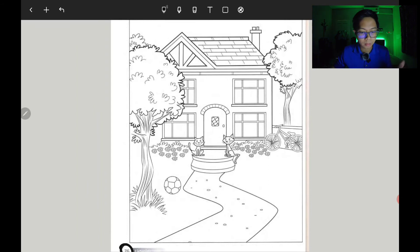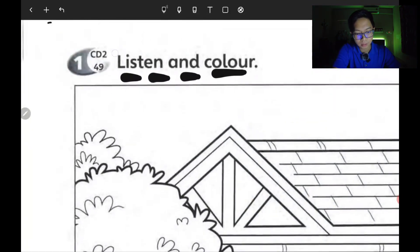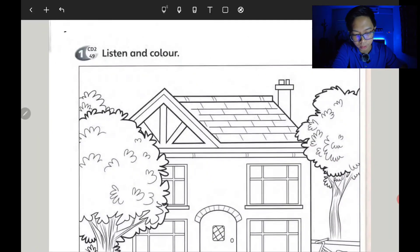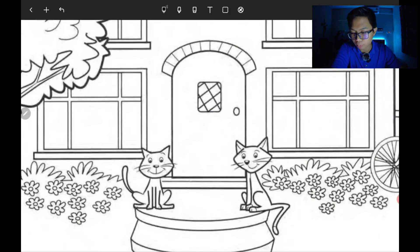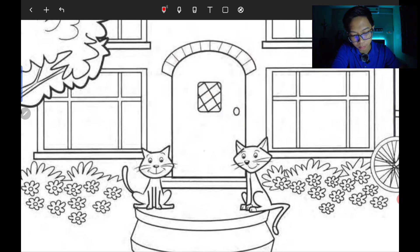All right, that's the recording or the audio track for this task or this exercise. So you have to listen again, just in case if you miss the cue just now, and color appropriately. For example, the boy on the recording just now mentioned that the door is in red. The door - he said red color. So you have to color the door in red.